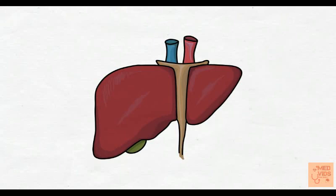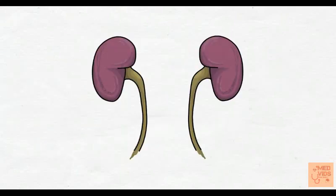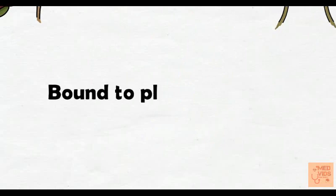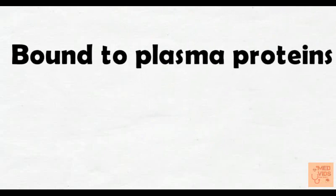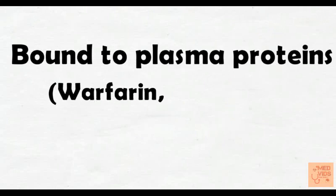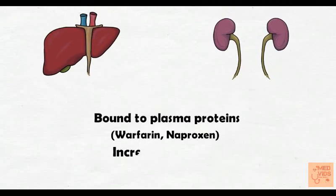Aspirin is metabolized by the liver and excreted by the kidneys. About 80% of aspirin in the plasma is bound to plasma proteins, and it displaces drugs such as warfarin, naproxen, and many other drugs from plasma proteins. By doing so, it increases the plasma levels of these drugs and increases the toxicity associated with them.